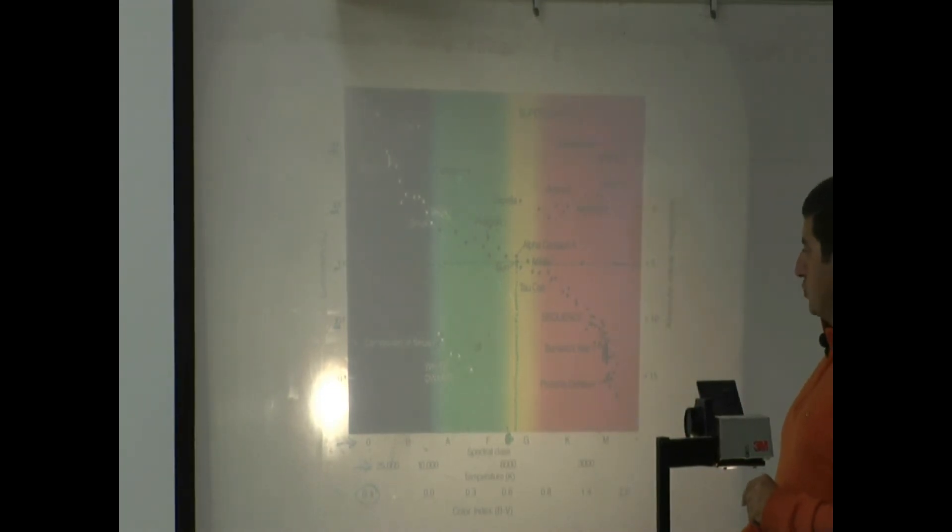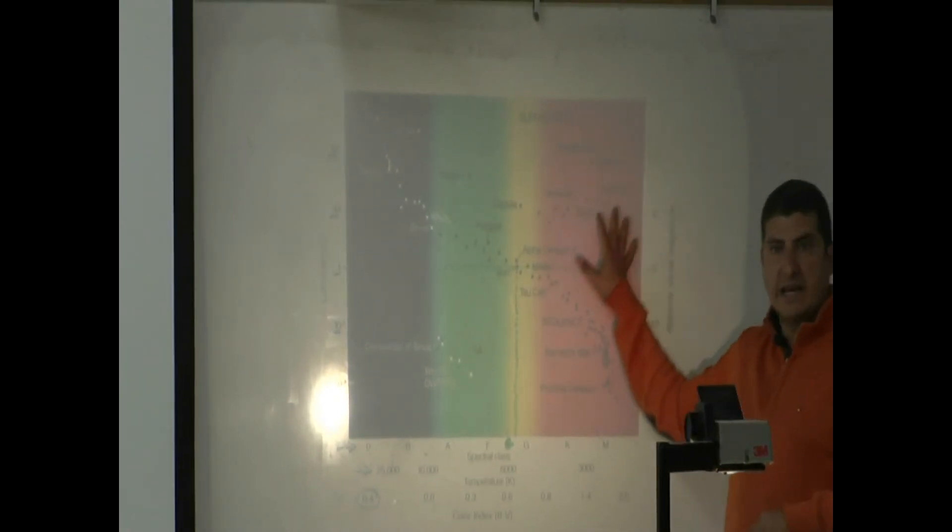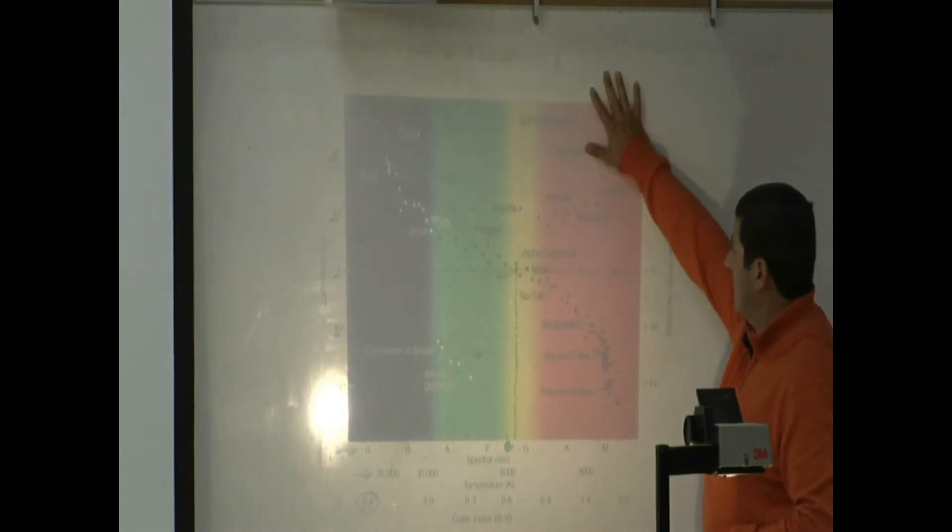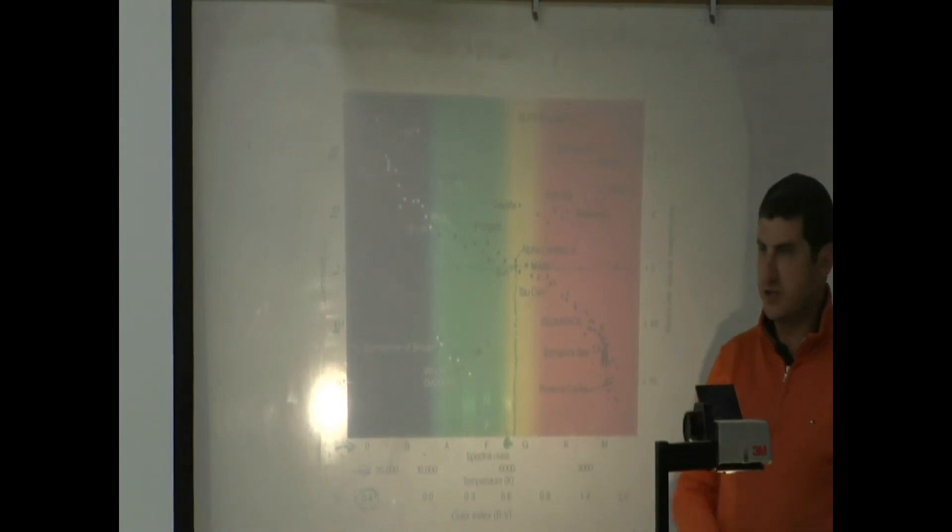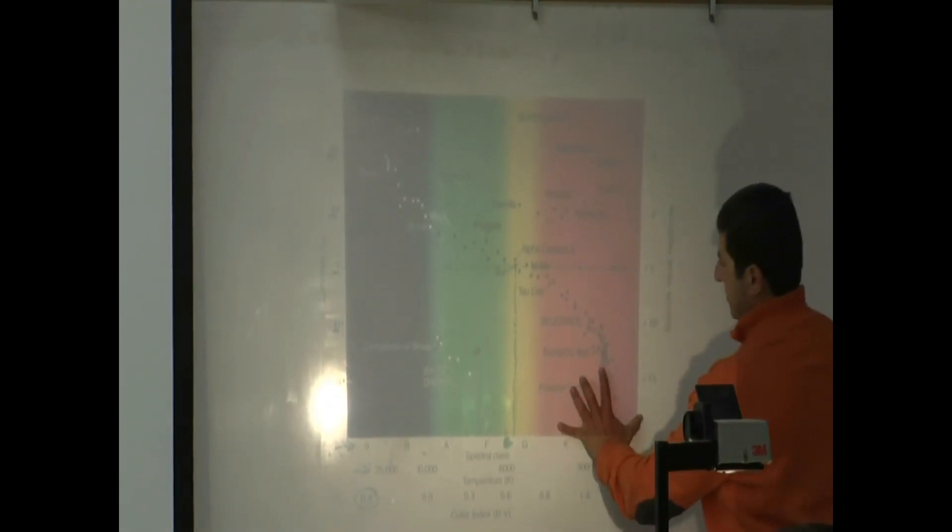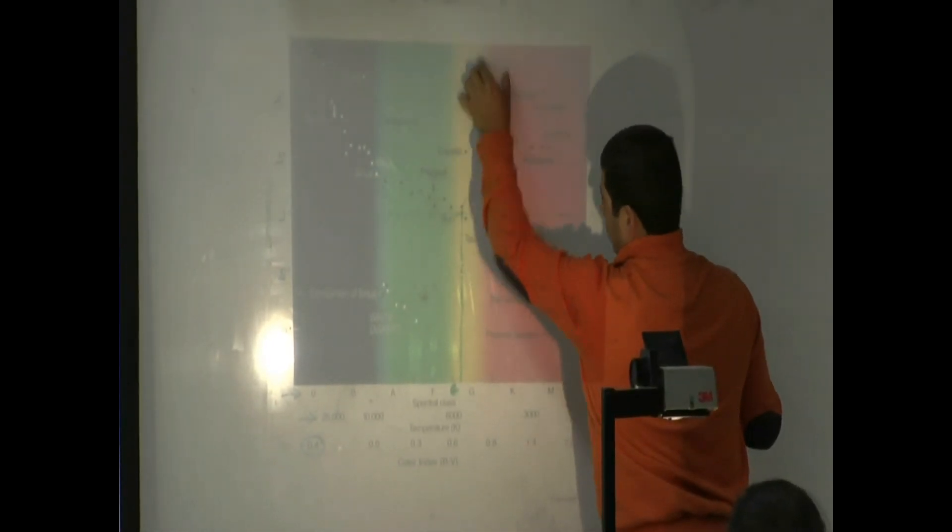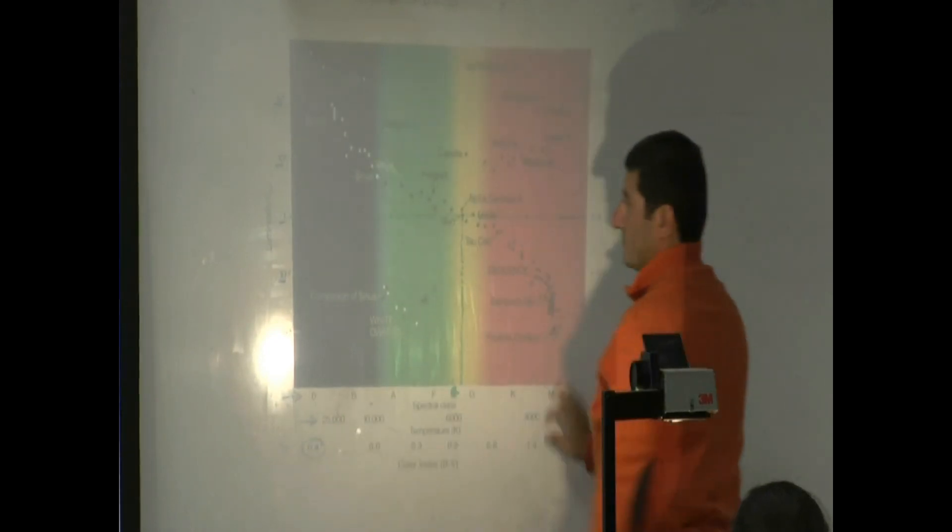I will ask you to plot 20 stars on the HR diagram, plot them, put their names next to them, and then afterwards, color it. And I'd rather you color the whole thing so that the background looks nice, all colored. So that means any star in this region looks red. Then yellow, I mean orange, yellow, green, and then blue.